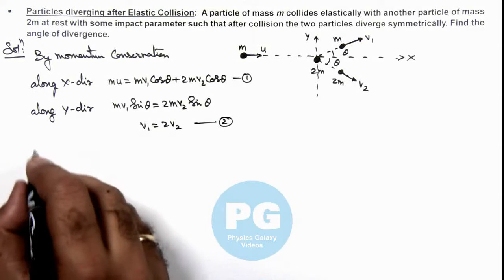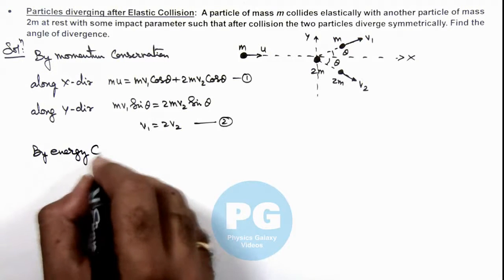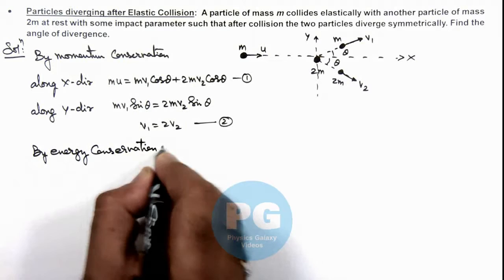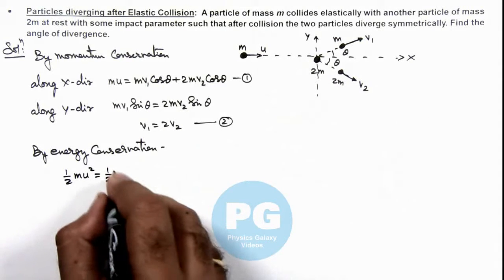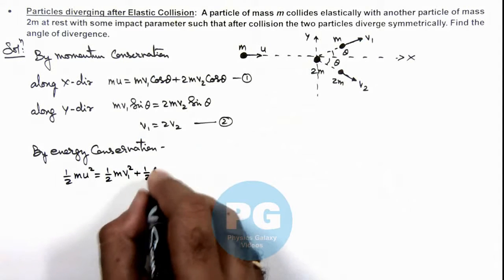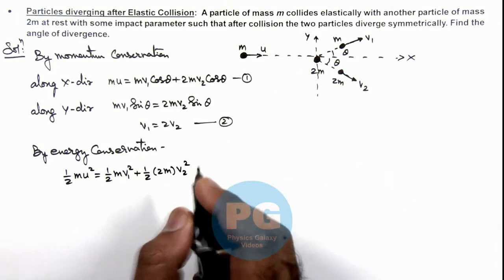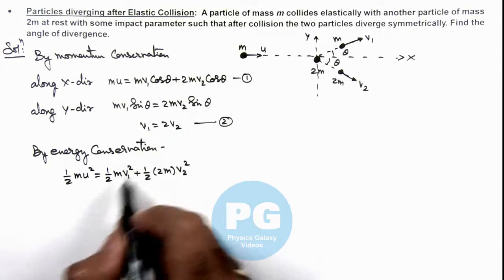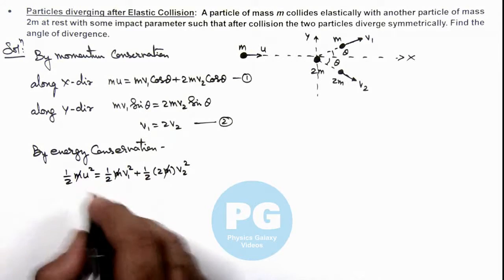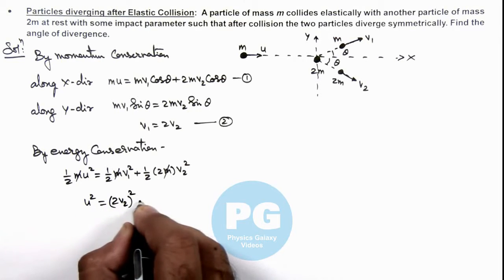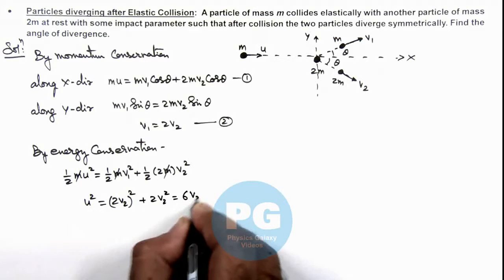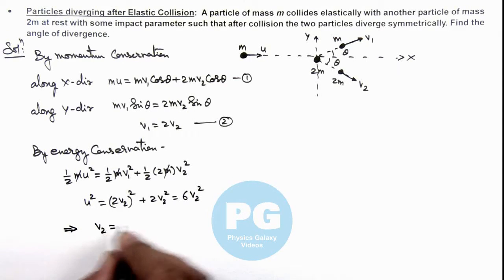Also we can write by energy conservation, the initial energy of system was (1/2)mu² and for elastic collision final energy must be same. So this is (1/2)mv1² plus (1/2)(2m)v2². If we substitute the value of v1 as 2v2 here, this m gets cancelled out and we are getting u² is equal to v1² which we can write as (2v2)² plus 2v2². This is equal to 6v2². This implies the value of v2 we are getting is u/√6 and the value of v1 is twice of v2 so it is 2u/√6.